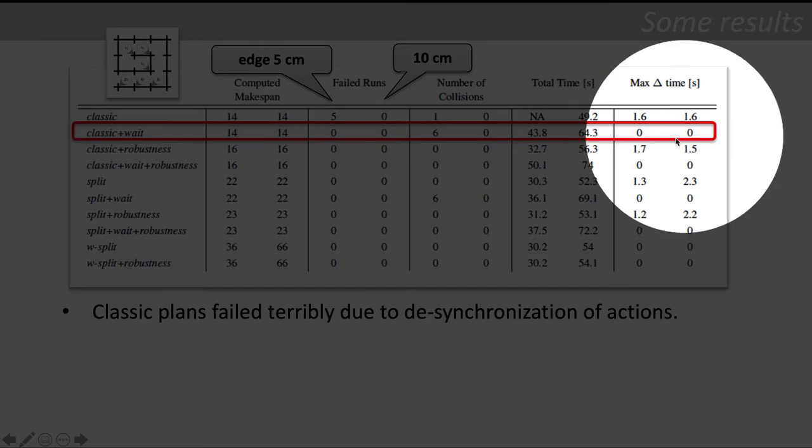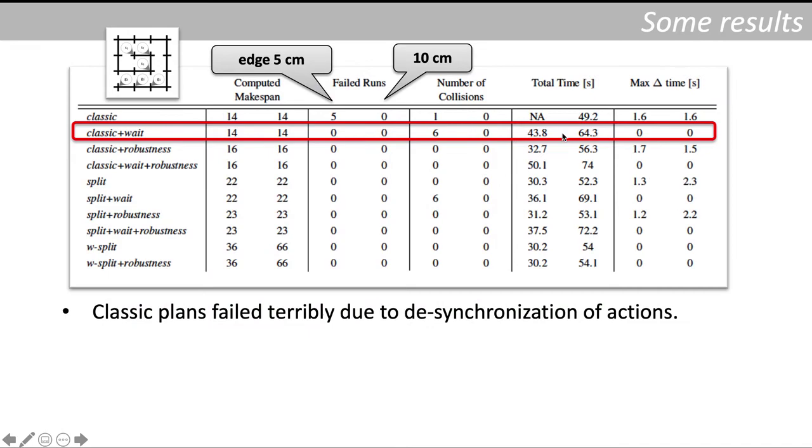We can improve this problem by extending duration of actions to be identical. We call this model classic plus wait. We can see that it solves the problem with synchronization, but the total makespan for execution is much larger in comparison with other models.